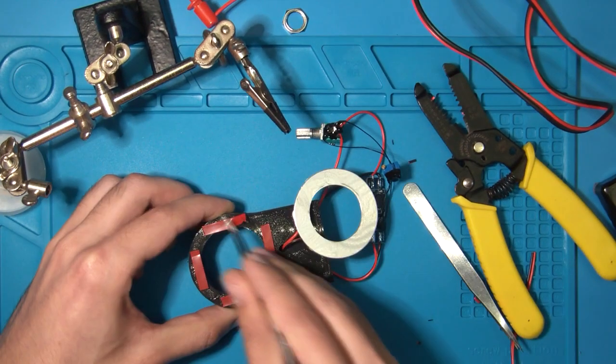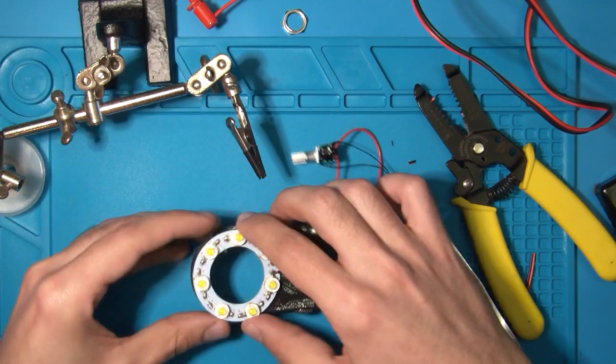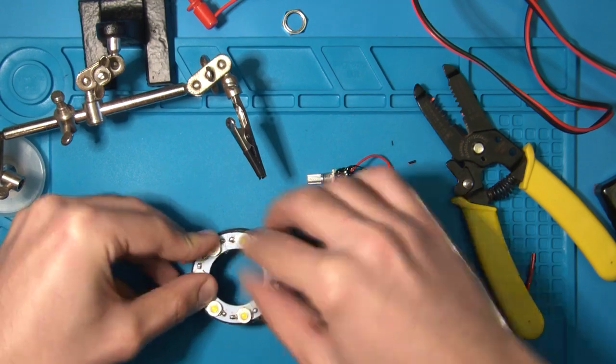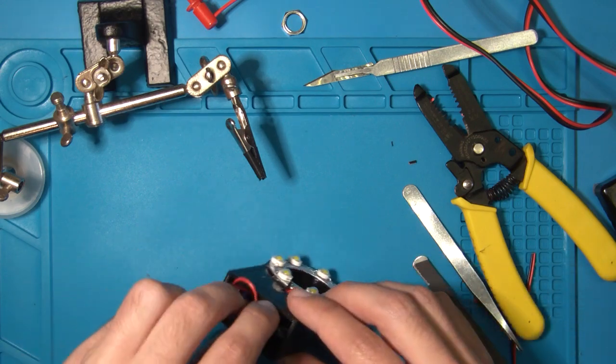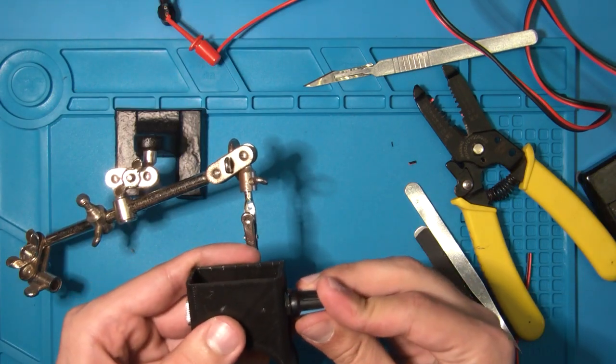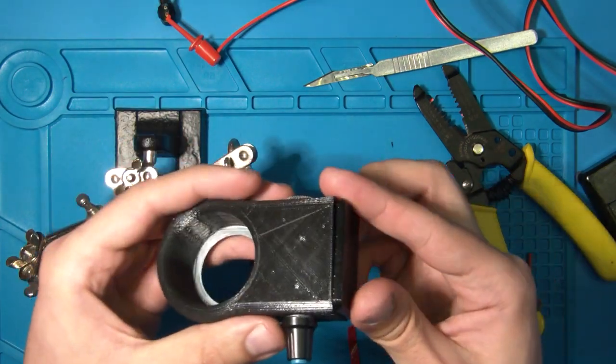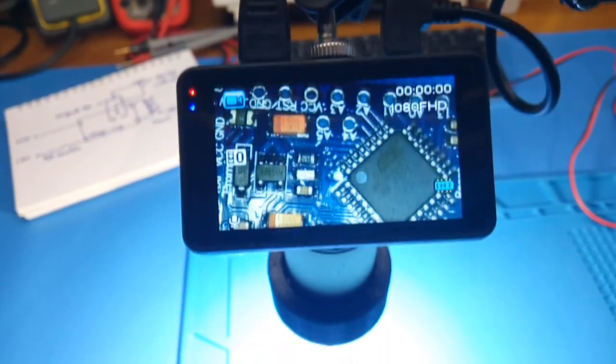To secure the board to the 3D printed enclosure, I just used double sided sticky tape. I mounted everything inside the box, and here is the final result.